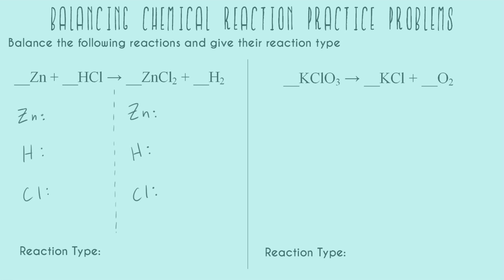Now I'm going to go through and list how many of each element we have at the beginning of the problem. So on the left-hand side we have one zinc, one hydrogen, one chlorine. On the right-hand side we have one zinc, two hydrogens, two chlorines.